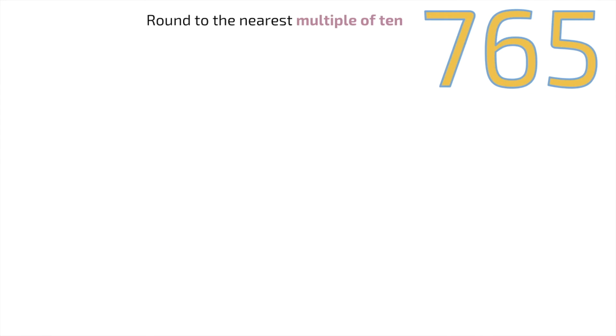One more time, we're going to round to the nearest 10. 765. I'm going to underline everything up to the tens place. So I'm going to ignore that 700 for right now. I don't need it. I just need to focus on the 65.